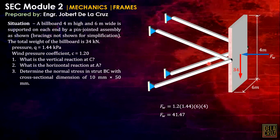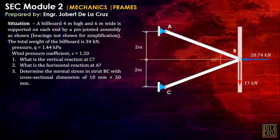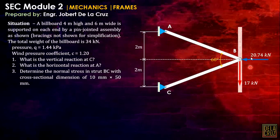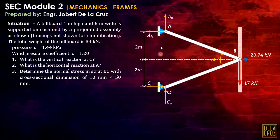To calculate the reactions at C and A and the normal stress, we need to draw the free body diagram. Since that is pin-to-pin, we have two supports: CH and CB on one side, and EH and AB on the other. My assumption is that the reaction at A goes up and to the left, and the reaction at C goes to the right and up.